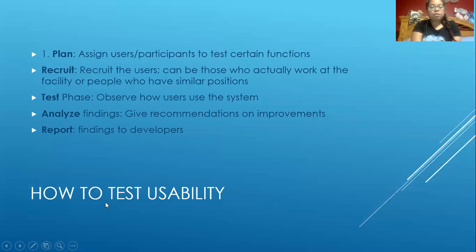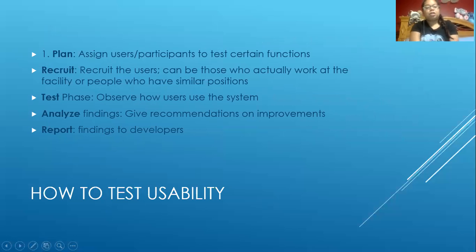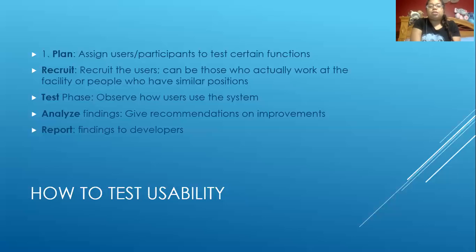How to test usability — there are five steps. The first step is to plan: assign users or participants to test certain functions. For example, one user could test the speed of the system, another could test how quickly it takes to log in or log out, or how many steps it takes to get to the patient portal.